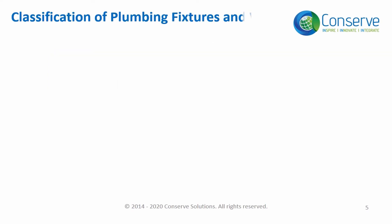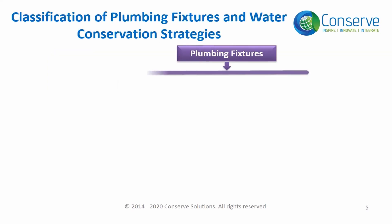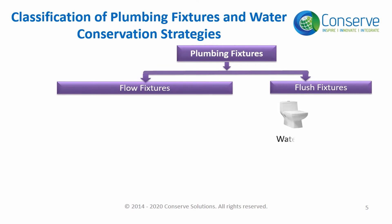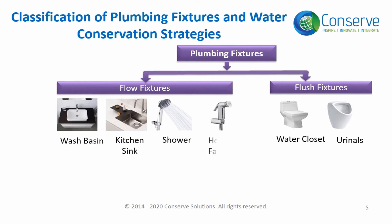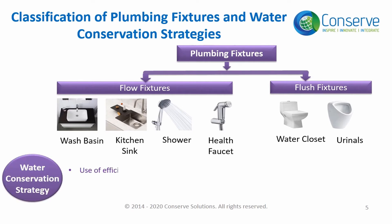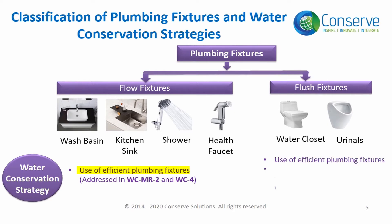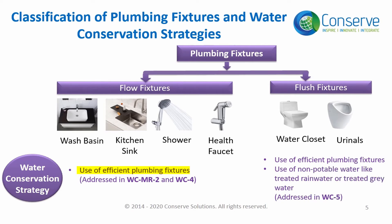Plumbing fixtures can be further classified into flow fixtures and flush fixtures. Water closets and urinals are considered flush fixtures, and others are classified as flow fixtures. The first step in water conservation in plumbing fixtures is to reduce water demand by using efficient plumbing fixtures, addressed in the prerequisite and credit for Water Efficient Plumbing Fixtures.